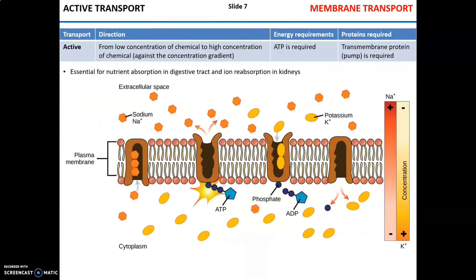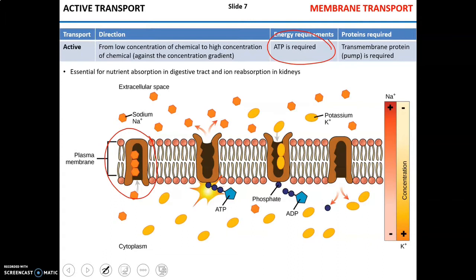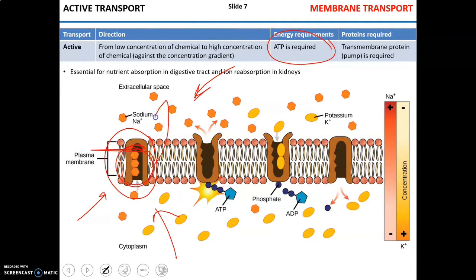Unlike passive transport, active transport does require energy in the form of ATP. This energy allows special transmembrane proteins called pumps to move chemicals from low concentration to high concentration — against the gradient. For example, the sodium-potassium pump moves sodium ions to the area of higher concentration and pumps potassium against its concentration gradient as well.